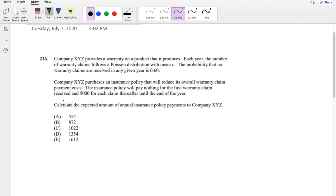So pause the video real quick and try this problem yourself. Okay, I assume you're tempted, so let's dive right in. So each year the number of warranty claims follows a Poisson distribution with the mean C.